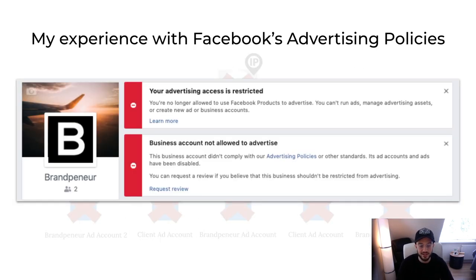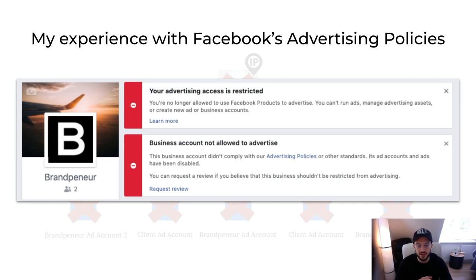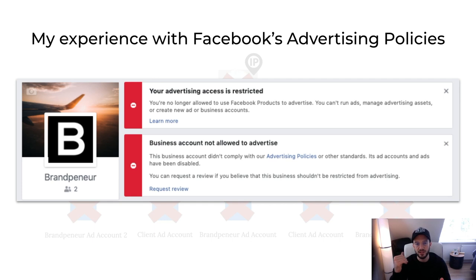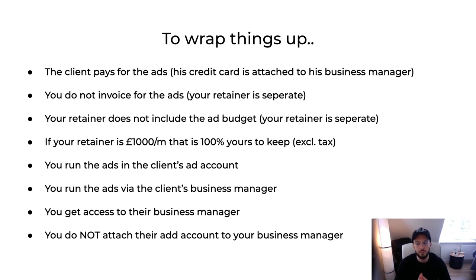About a year ago, Facebook literally took down my entire personal profile — not just my business manager, not just the ad accounts, but my entire personal profile. So I no longer run ads under Joshua Daniel George on Facebook because I can't access that account for business reasons. The message I got said: 'This business didn't comply with our advertising policies, its ad accounts and ads have been disabled, and you are no longer allowed to use Facebook products to advertise.' For those in the program, I explain exactly what I did wrong and how I got back up and running again.